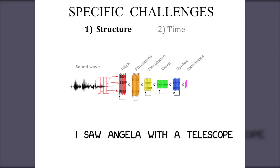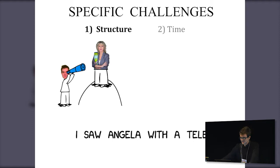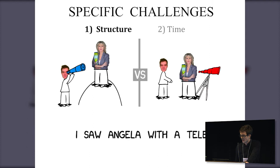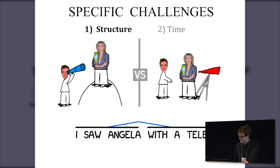When I say 'I saw Angela with a telescope,' most of you build a representation where I, the narrator, saw Angela through a telescope. But this representation is actually non-trivial — it's not necessarily encoded in the stimulus. You could have understood it differently: I saw Angela and there happened to be a telescope next to her. In one case, you're binding the constituent 'with a telescope' to the action phrase 'I saw Angela'; in the other case, you link this constituent directly to the noun Angela.